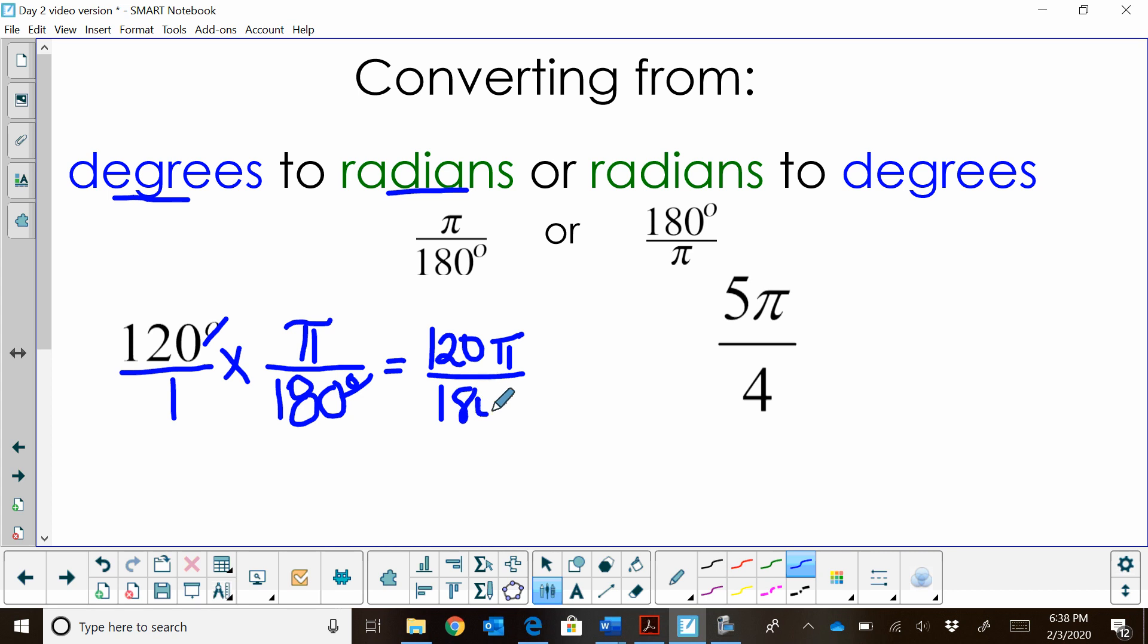When we multiply across, the degrees are going to cancel. I'm going to get 120π all over 180. This reduces nicely. I can divide by 10 by canceling my zeros out, and then divide by 6. I get 2π thirds, and there is my radian measure.